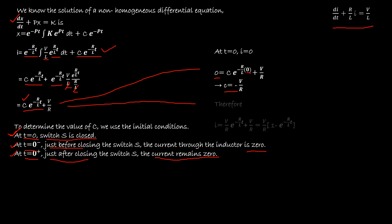Now we can get the complete solution. Substituting C = -V/R into the expression: I = (-V/R)·e^(-R/L·t) + V/R. Taking V/R as a common element, there we get: I = (V/R)·(1 - e^(-R/L·t)). This is the complete solution for current I.